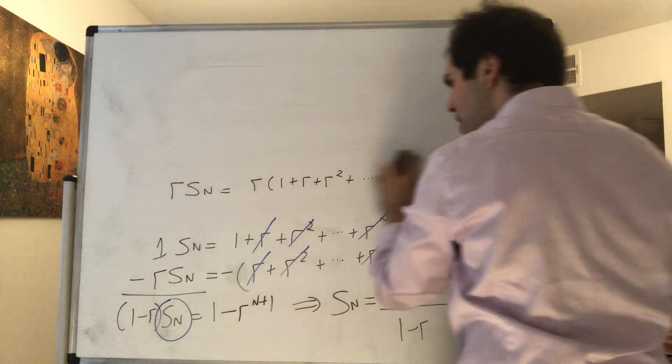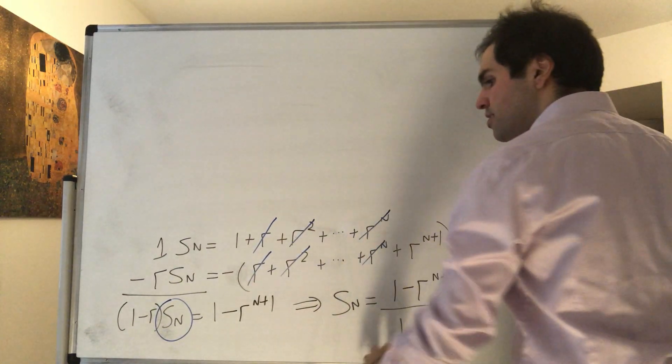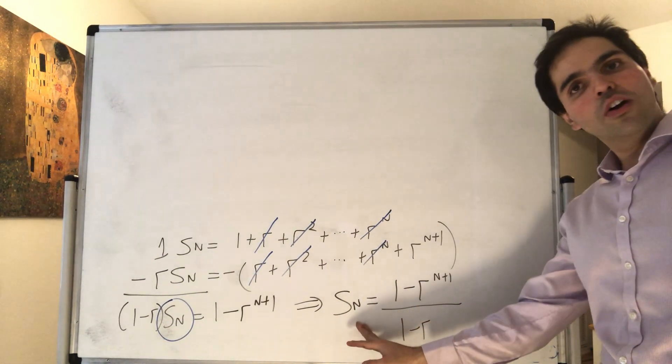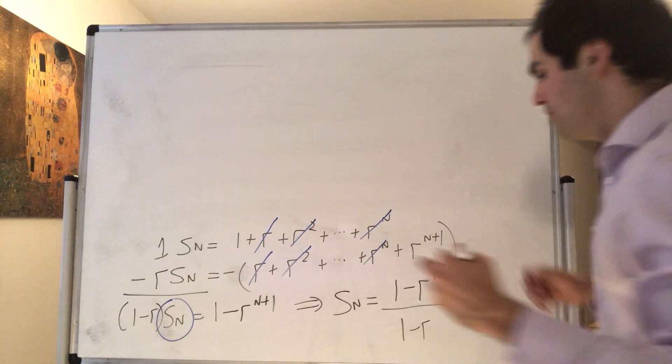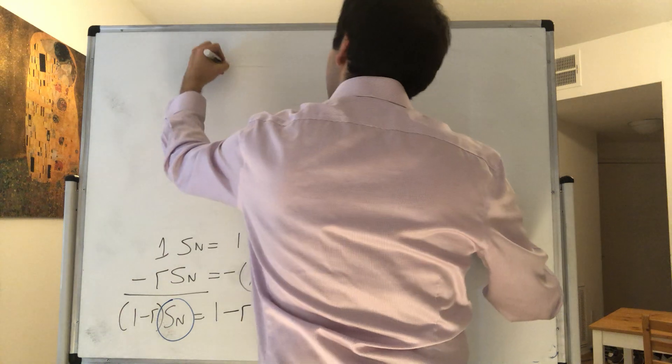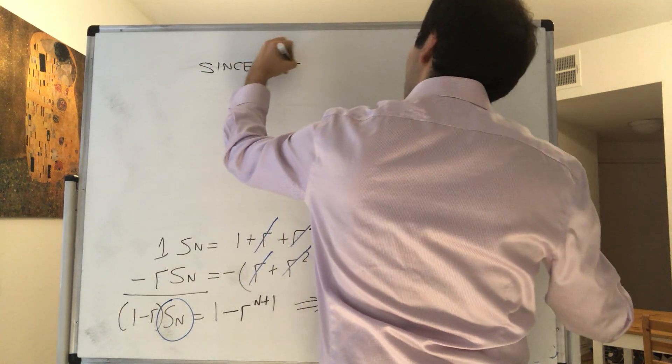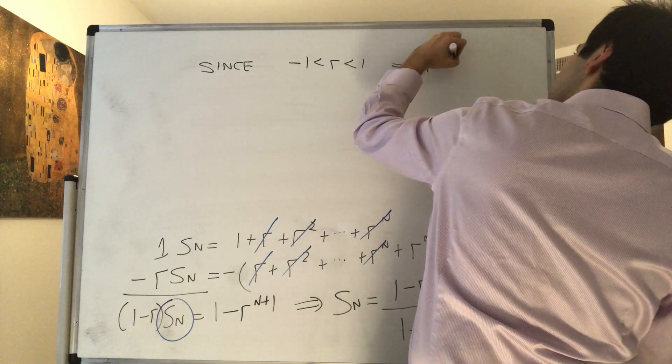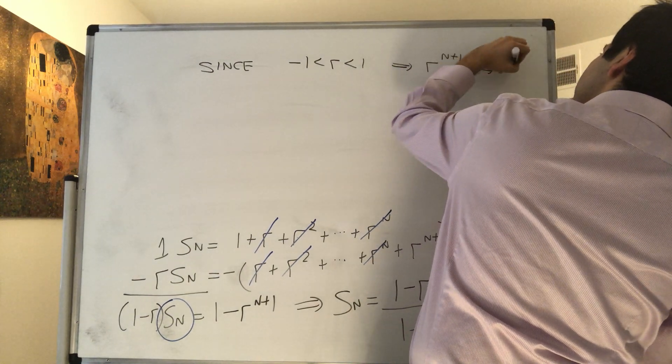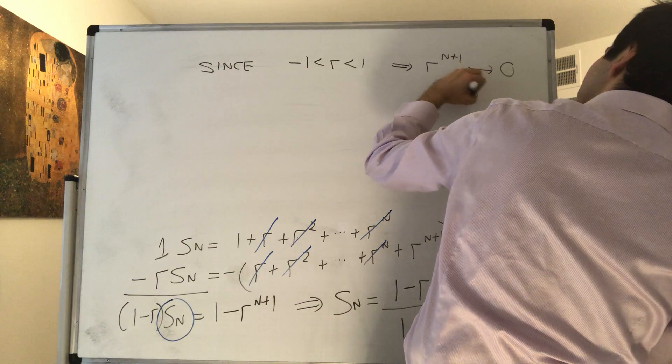So again, remember how to find the series: we found a partial sum, which we already found, and we just need to let n go to infinity. So since r is between minus 1 and 1, what we get is r to the n plus 1 goes to 0 as n goes to infinity.